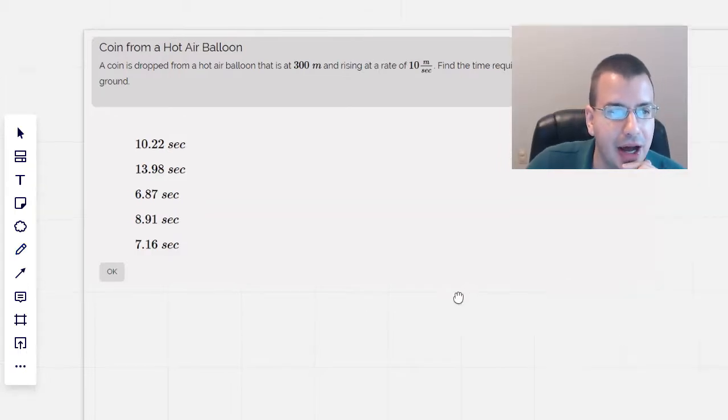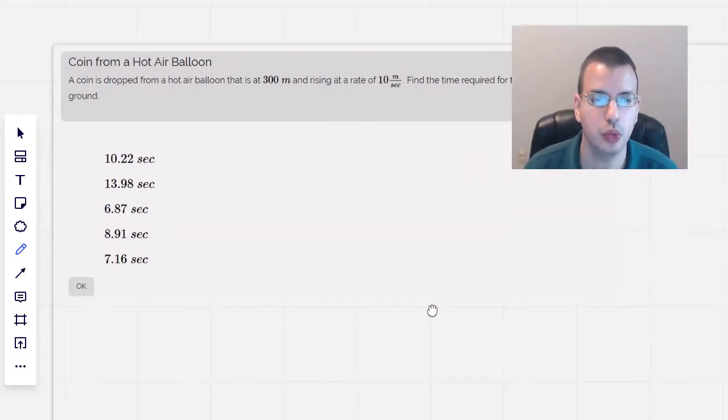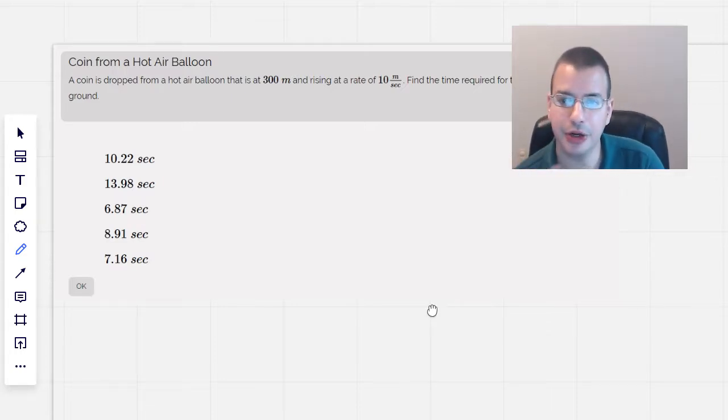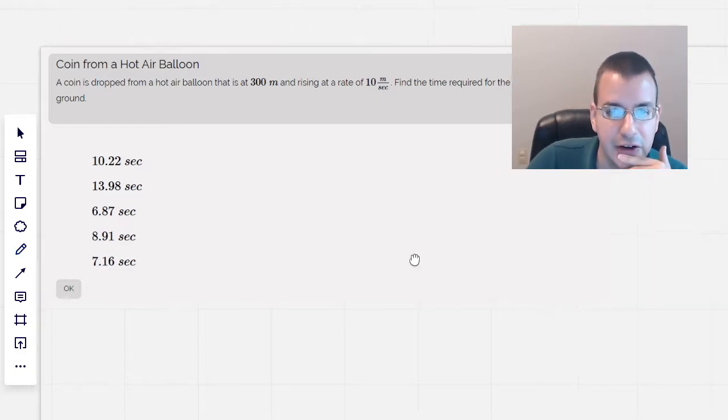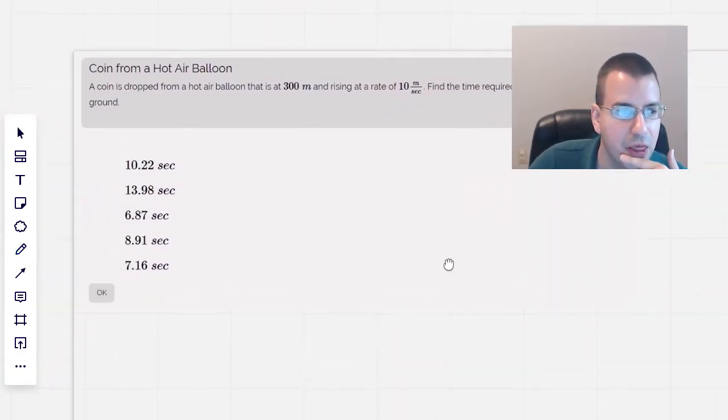The coin is dropped from a hot air balloon at 300 meters and rising at a rate of 10 meters per second. So prior to the coin being dropped, it is rising at 10 meters per second. This picture gives us an initial velocity. Find the time required for the coin to hit the ground.